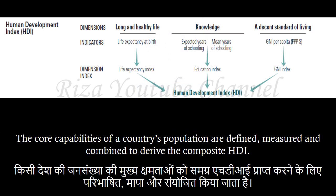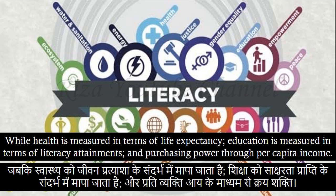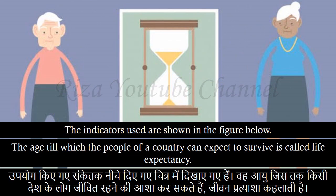The United Nations Development Programme has used these ideas to construct an index known as the Human Development Index. The core capabilities of a country's population are defined, measured and combined to derive the composite HDI. While health is measured in terms of life expectancy, education is measured in terms of literacy attainments, and purchasing power through per capita income. The indicators used are shown in the figure below.